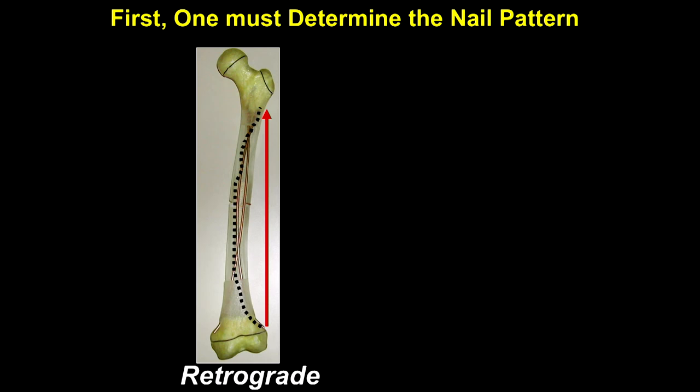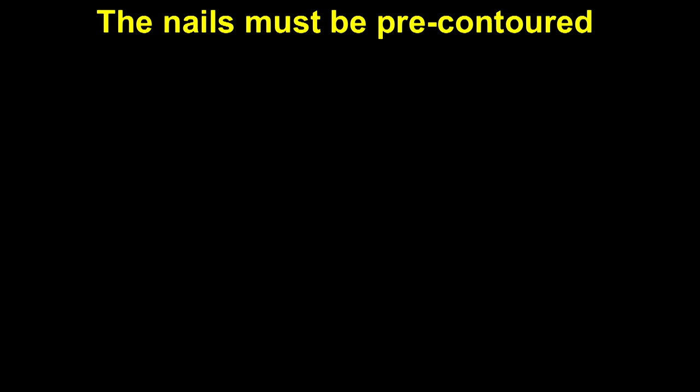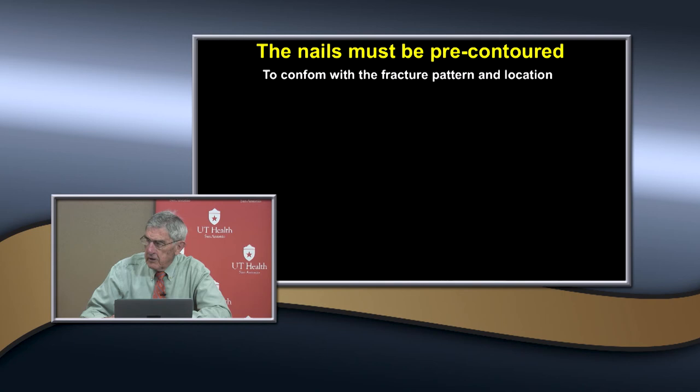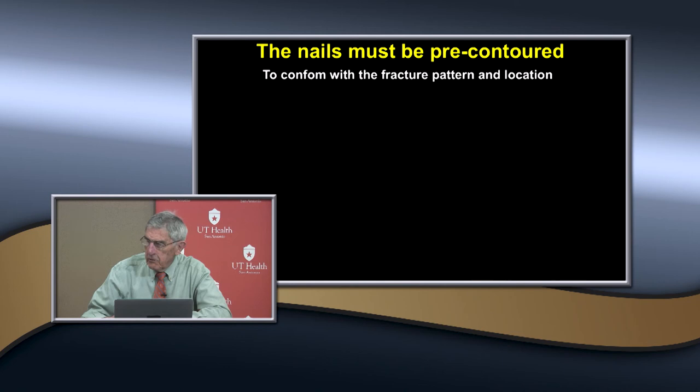Regarding technique: you need to pre-bend the nails so you have three-point fixation, conforming to the fracture pattern. If it's proximal, bend proximally; mid-shaft, bend mid-shaft; distal, bend distally. The nails are passed either retrograde or antegrade. For retrograde passage, you use the left-side bending pattern; for antegrade passage, you use the right-side bending pattern with two bends. That's what gives you three-point pressure and spread at the fracture site.